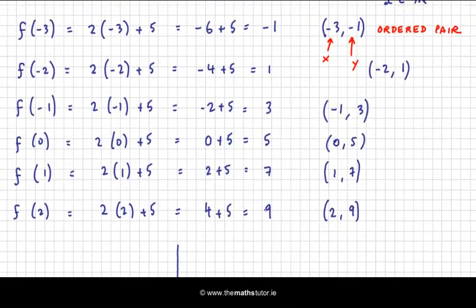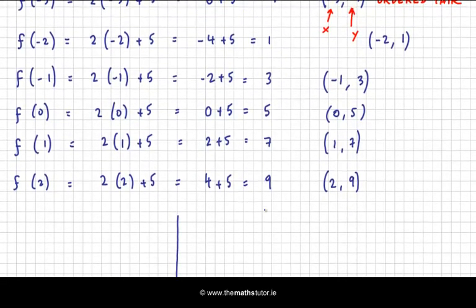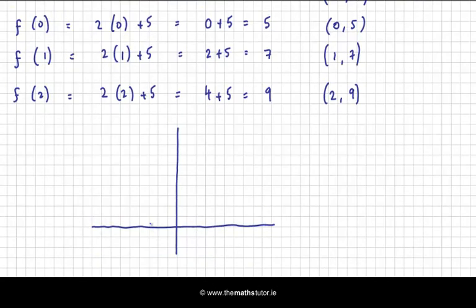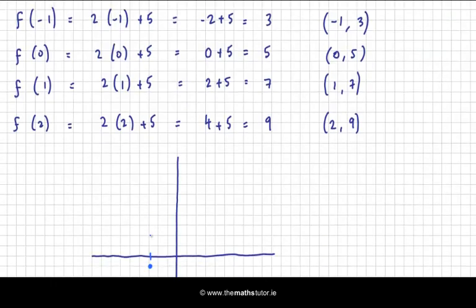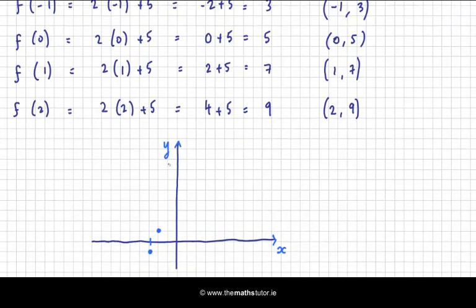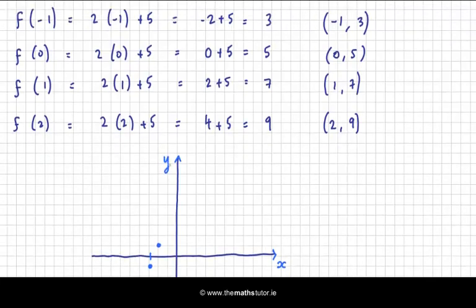Now my first number is minus 3 and minus 1. So let's pick another colour here. There's minus 3 and minus 1 is that point there. Then I have minus 2 and 1. So we'll go across to minus 2 and up to 1. And by the way, you always should label your axes, x and y.